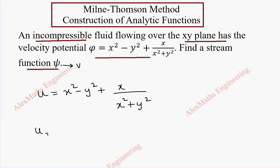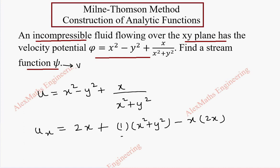As a first step, we have to find its partial derivative with respect to x, which is 2x, and the constant y² term gives 0. Here we have to follow the quotient rule: differentiate the numerator, keep the denominator as it is, minus keep the numerator as it is, differentiate the denominator, which is 2x, all divided by (x² + y²) whole square.